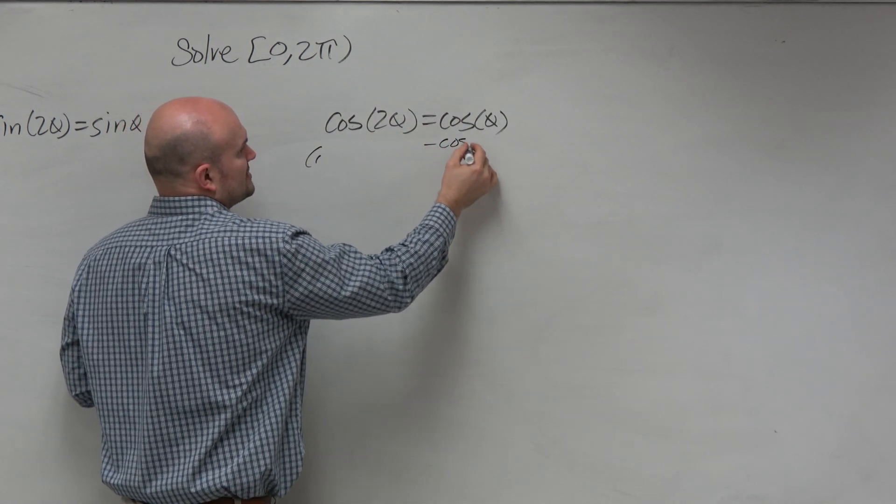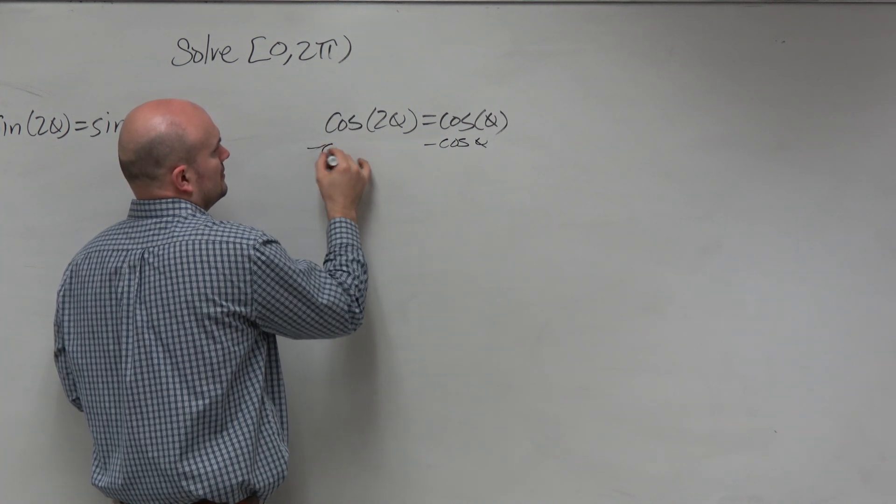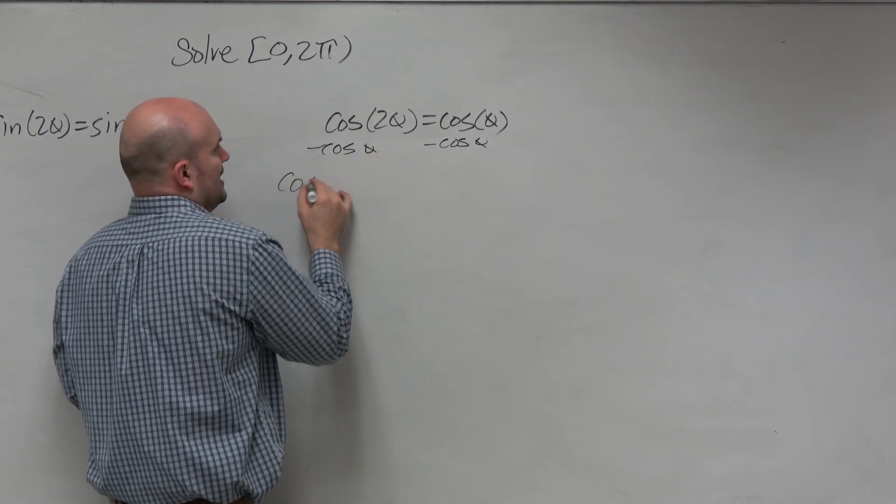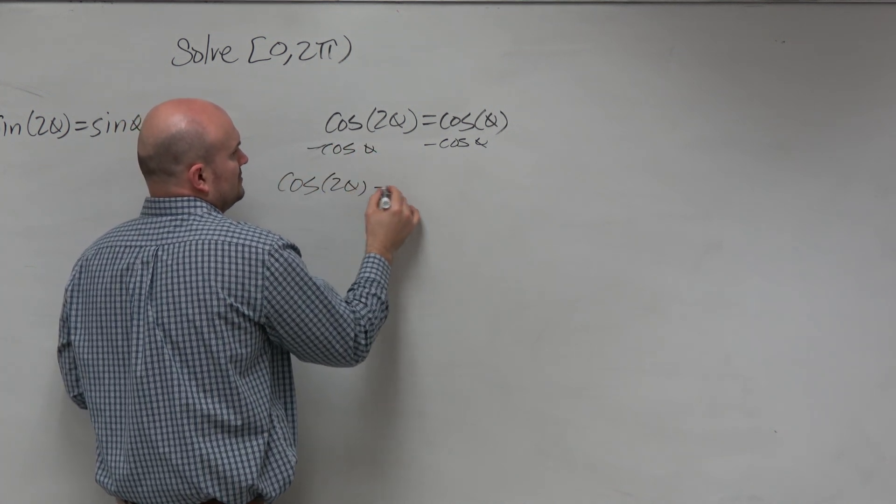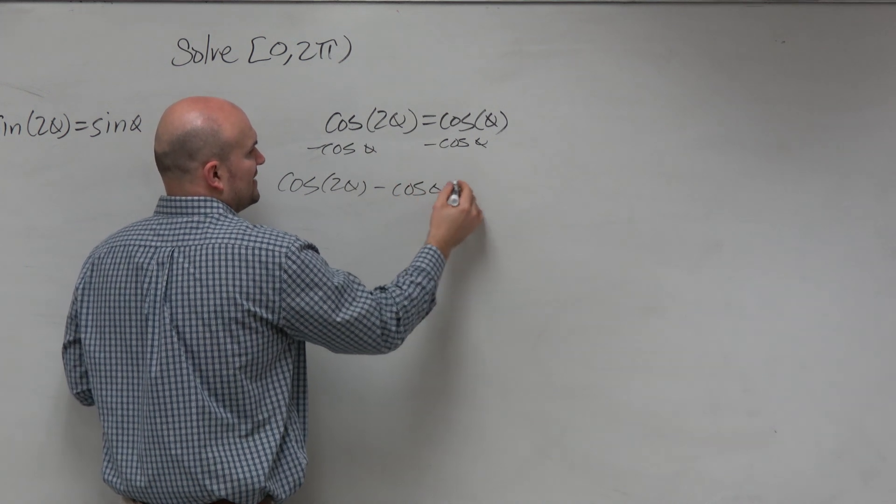So you subtract the cosine of theta. And now I have cosine of 2 theta minus cosine of theta equals 0.